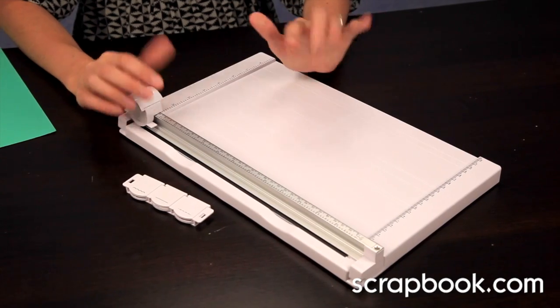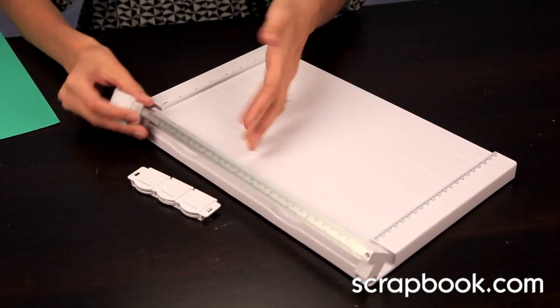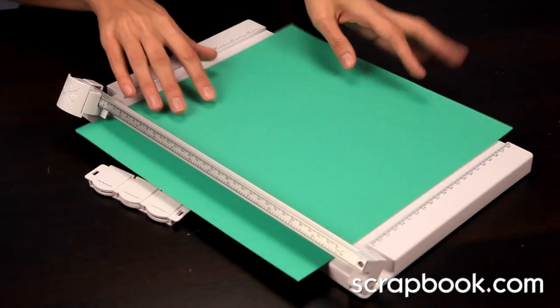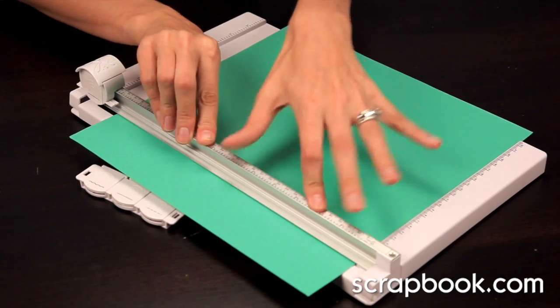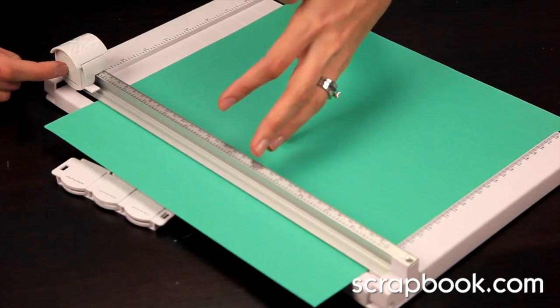This is the X-Trim Rotary Trimmer. So this is perfect if you enjoy a rotary cut, which means the paper glides in right here, and this bar will hold the paper secure, and then you slide the blade carriage across the paper.